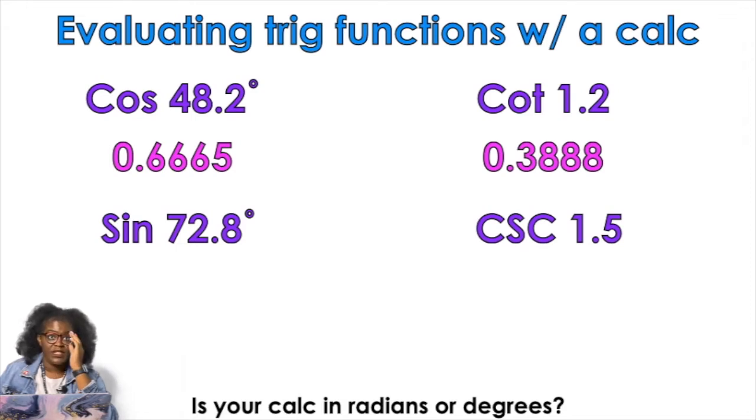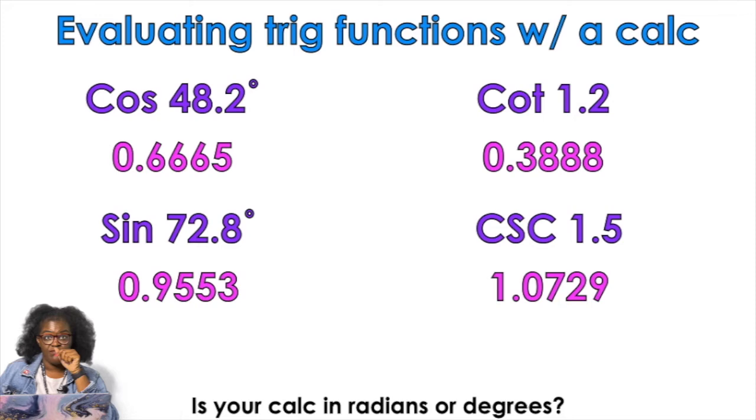So now let's do the sine of 72.8 degrees. Again, in your calculator, you need to change it back to the degrees and press sine 72.8 or press 72.8 sine. 0.9553. So then for cosecant of 1.5, cosecant is the reciprocal of sine, and that's a problem that's in radians. So change your calculator to radians, find the sine of 1.5, and then press the reciprocal button on your calculator. You should get 1.0729. Ta-da!